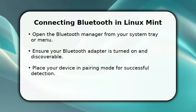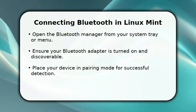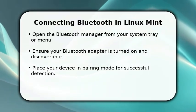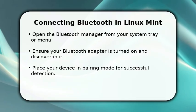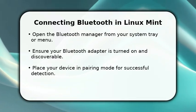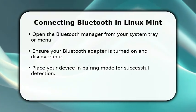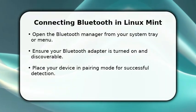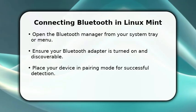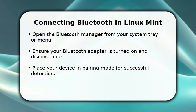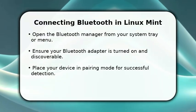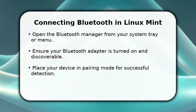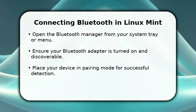Make sure your computer's Bluetooth adapter is active and set to be discoverable. Simultaneously, prepare your external Bluetooth device by putting it into its pairing mode. This ensures it can be found by your Linux Mint system.